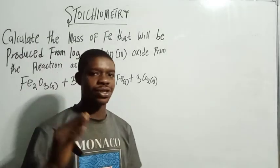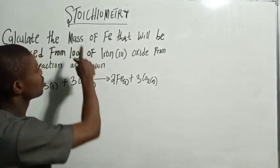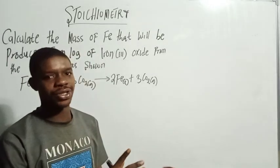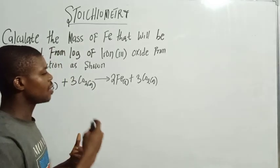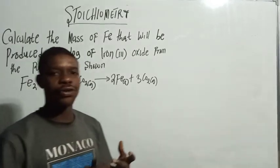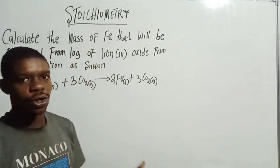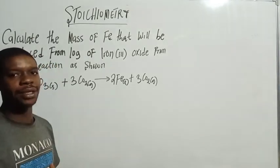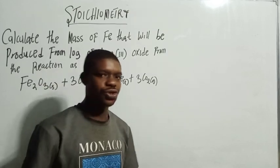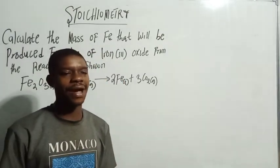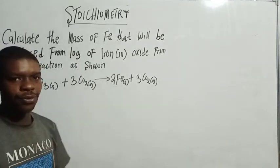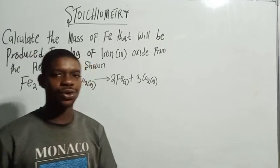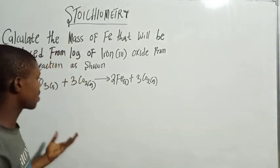Welcome back to chemistry. I'm so excited to have you in today's video. Let's look at stoichiometry. Stoichiometry is the calculation aspect of chemistry that deals with calculating the amount of a substance formed in a chemical reaction, or the amount of reactant that produces a certain amount of product. A lot of students — including year two, year three, and higher education students — find issues with this type of calculation.